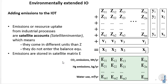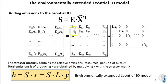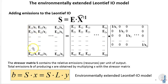You can add environmental extensions to input-output analysis by adding the different emissions to the input-output table and then normalizing those emissions by multiplying with X-hat inverse from the right, exactly as we did for the A matrix. This gives you the different emissions per unit of sectoral output.